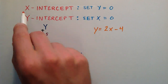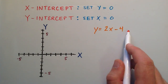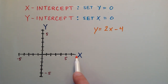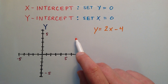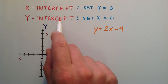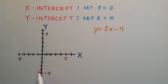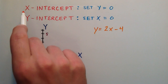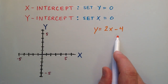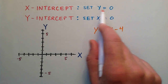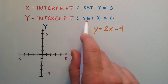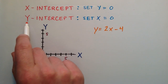The x intercept of this line is going to be the position on the x axis that our line crosses the x axis — basically a point on the x axis where our line crosses it. The y intercept is going to be a point on the y axis where our line crosses the y axis. To find the x intercept, we set y equal to 0 and solve for x. To find the y intercept, we set x equal to 0 and solve for y.